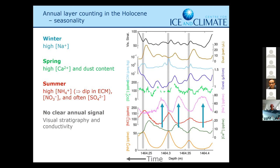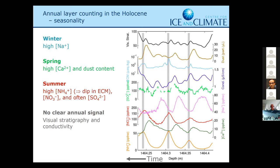So we have a winter signal, then we have a spring signal, which is the dust input coming from the East Asian deserts to Greenland — shown by the brown dust curve and the green calcium curve, which is the soluble part. Then we have some species that peak in summer: ammonium and nitrate, and often also sulfate. We have fairly good reasons to believe that we understand why there's this seasonality.